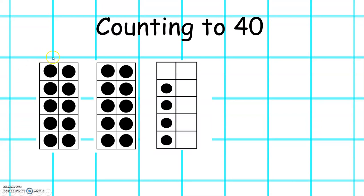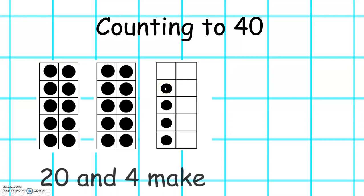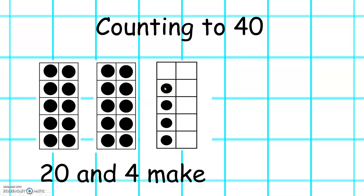Here we have 10, 20, 21, 22, 23, 24. So 20 and 4 make 24.